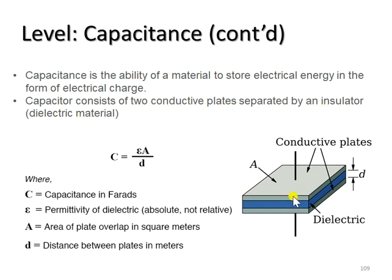A capacitance is calculated by the following formula. From the formula, we can see that the value of capacitance, C, is directly proportional to the area of the plate, and inversely proportional to the distance between plates.